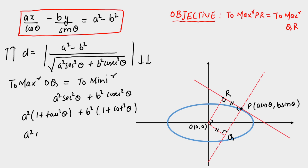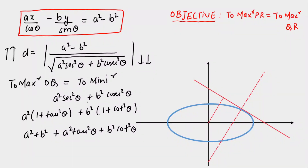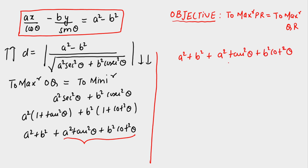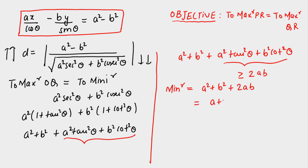We need to minimize a² + b² + a²tan²θ + b²cot²θ. Applying AM-GM to the last two terms: a²tan²θ + b²cot²θ ≥ 2√(a²tan²θ · b²cot²θ) = 2ab, since tan²θ · cot²θ = 1. So the minimum value of the full expression is a² + b² + 2ab = (a + b)².